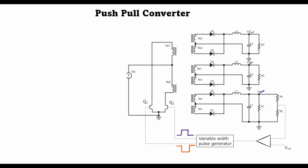Whenever a control signal is given to one of the transistors, that transistor will turn on and it will drive the collector terminal to a voltage equal to the saturation voltage. Assuming these are bipolar junction transistors, this collector terminal will be equal to VCE saturation, which is approximately equal to one volt. Similarly, when Q2 is turned on, that point is also roughly equal to one volt. So whenever one of the transistors turns on — for instance Q1 — a voltage of VDC minus one volt is applied to each half-primary.